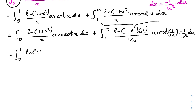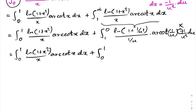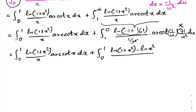After the substitution, the first integral remains from 0 to 1 of ln(1 + x²)/x · arccot(x) dx. The limits of the second integral flip from 1 to 0, and the minus sign cancels when we reverse them back to 0 to 1. Since a definite integral is independent of the variable name, we replace u with x. We simplify ln(1 + 1/u²) = ln((1 + u²)/u²) = ln(1 + u²) − ln(u²).